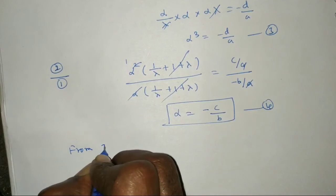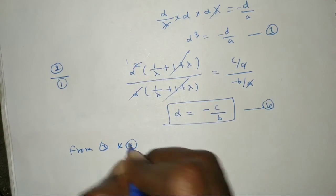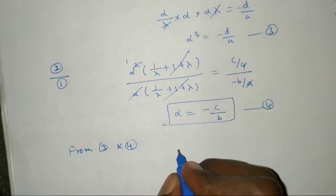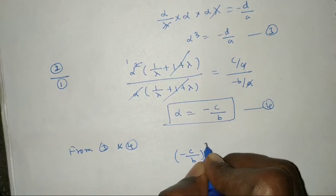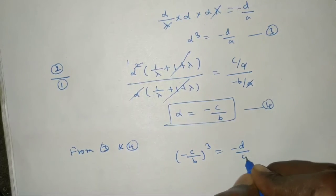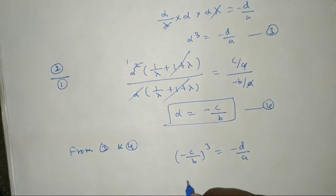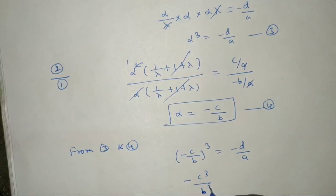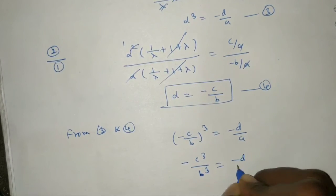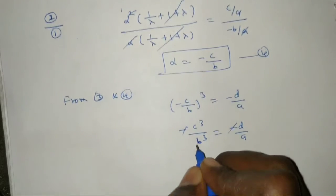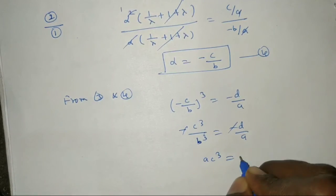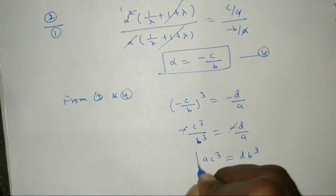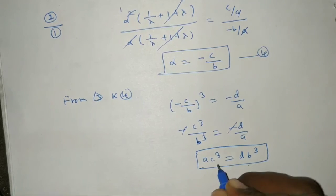Substituting α = −c/b into α³ = −d/a: (−c/b)³ = −d/a, so −c³/b³ = −d/a. The negatives cancel and cross-multiplying gives ac³ = db³. This is the required condition.